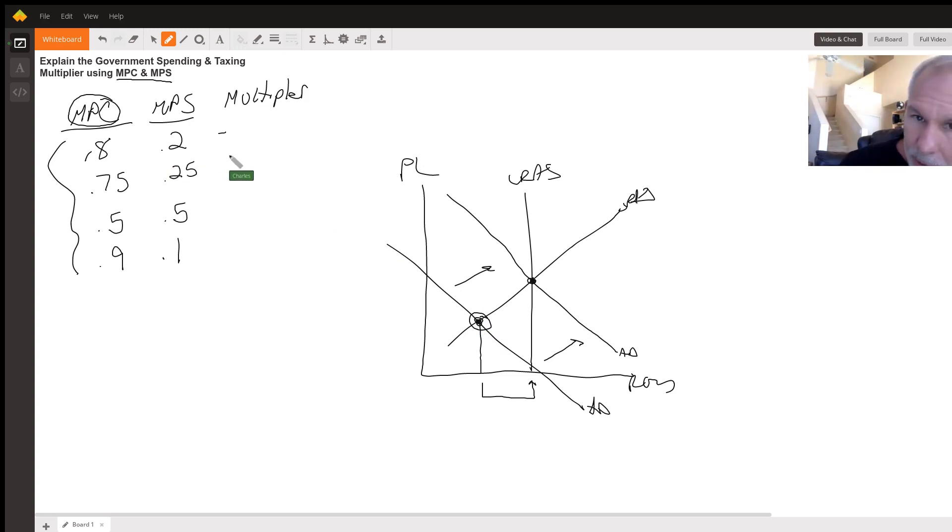So what they're going to do is they're going to give you some information. They're going to say the MPC is 0.8. What does the government need to spend? Let's just say our recessionary gap here is 500 billion. We need 500 billion of GDP increase to get aggregate demand to shift back to full employment. What does the government need to spend to get our 500 billion GDP increase? So we have to find our multiplier.